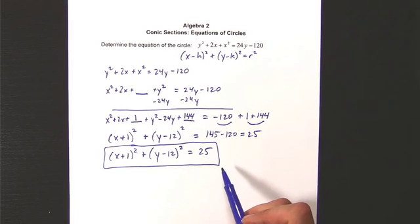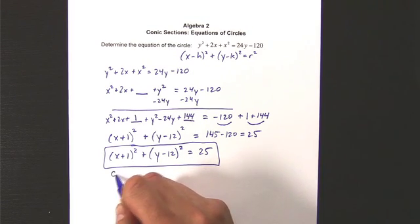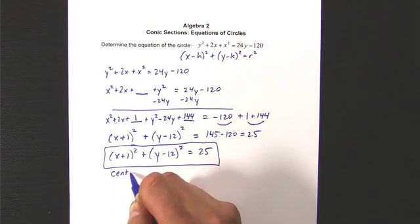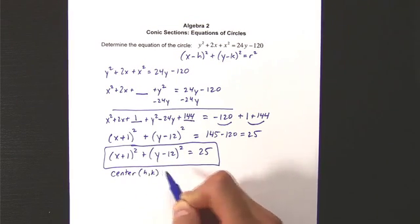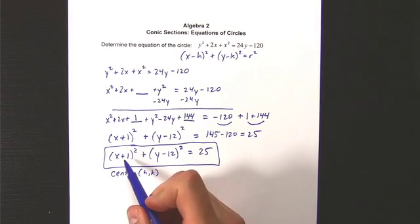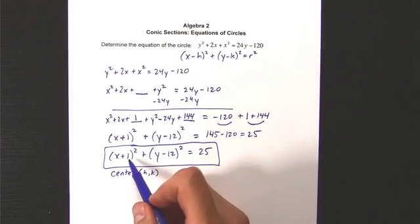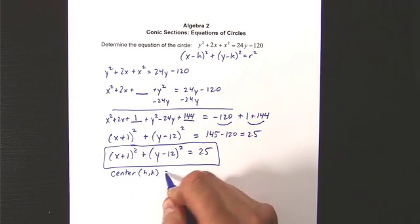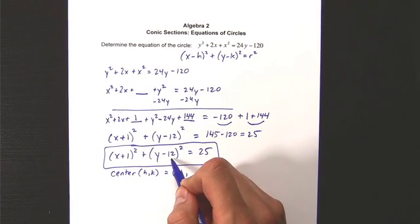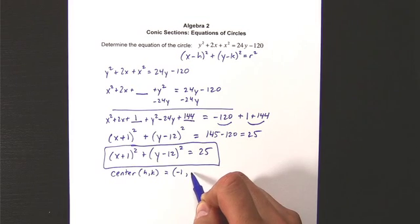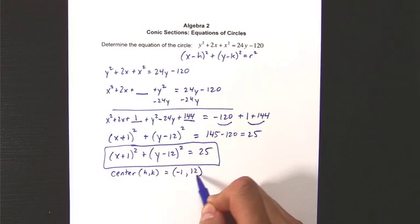Now, once I have the equation in general form, I know quite a bit. Because the general form allows me to look at specific things like the center. Center for the circle is the point h comma k. And since this is positive 1, and my general form has negative h, I have to change the sign here to get my center point. So this would be negative 1. And the k value here is going to be 12. So I know that the center for this circle exists at negative 1 comma 12.